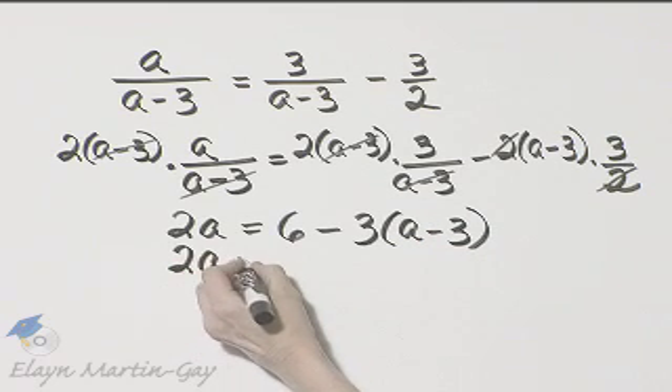So that's 2A is equal to 6. Now, let's multiply out. Negative 3 times A, that's negative 3A. I'll write minus 3A. And then negative 3 times negative 3, that's positive 9. I'll write plus 9.